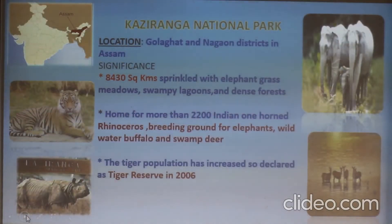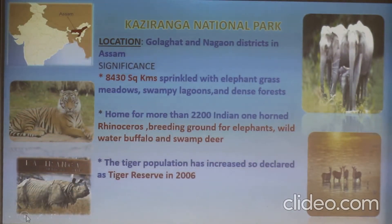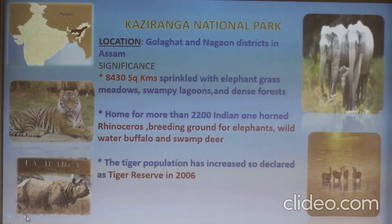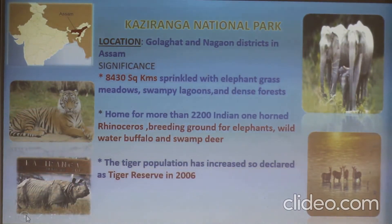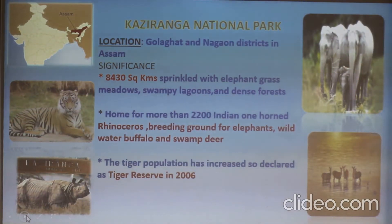Now let us look at Kaziranga National Park. When you take this particular national park, first you have to write the location. It is located in Assam, specifically in the Golaghat and Nagaon districts of Assam.